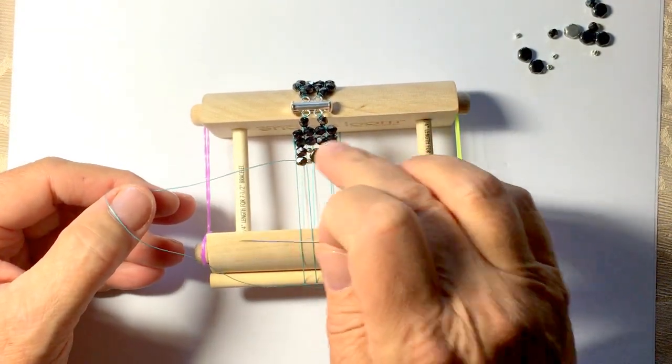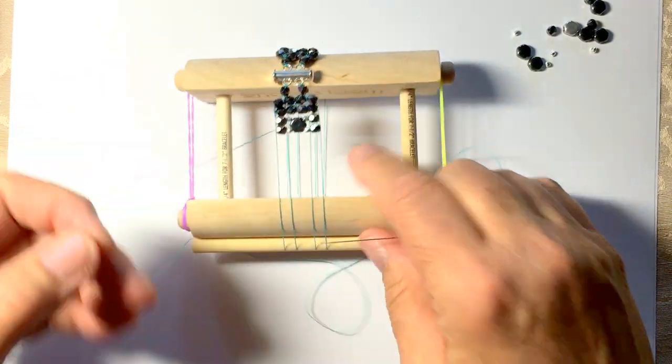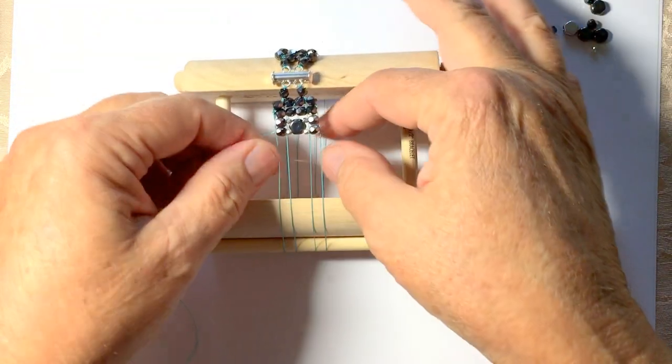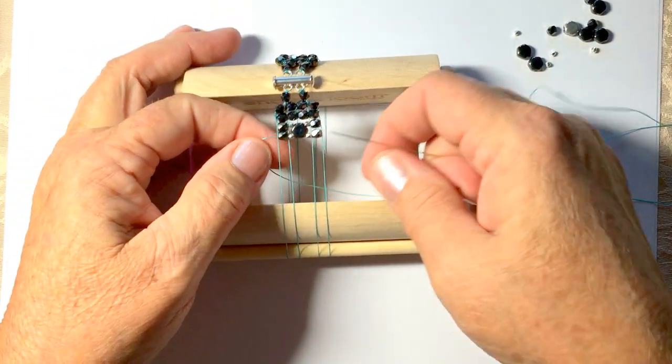Now you can see this is not flopping down, so everything has gone as planned. So then you would pass under, and you're ready to start the next row.